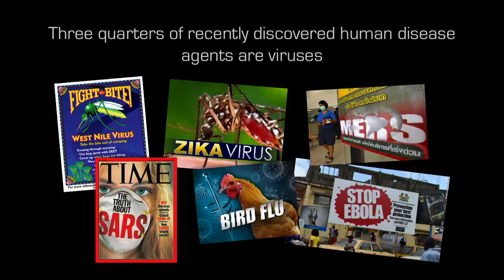Three quarters of recently discovered human diseases are caused by viruses rather than bacteria. Most of these viruses have an RNA genome rather than a DNA genome, and most are transmitted from an animal source to humans before changing to spread human to human. There are one to four new human pathogens discovered each year. Many just go away or cause limited cases, but some go on to cause epidemics — West Nile virus, SARS in 2003, and Zika and Ebola — all emerged within less than two decades.